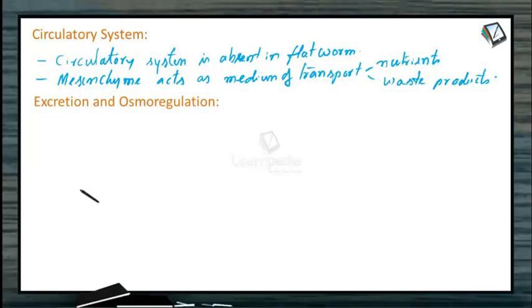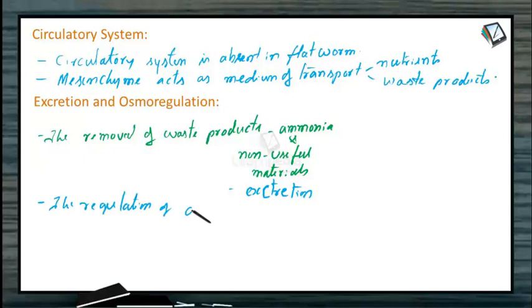Excretion and osmoregulation. The removal of waste products of metabolism like ammonia and other non-useful materials is called excretion, whereas the regulation of amount of fluids in the body is called osmoregulation.